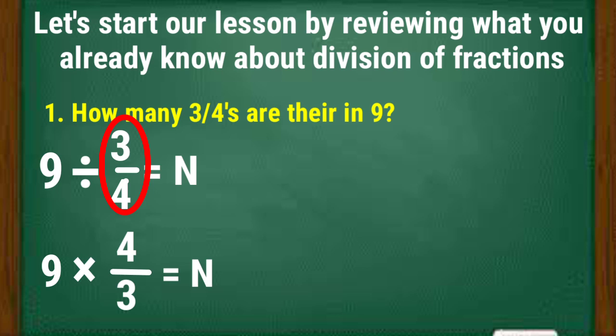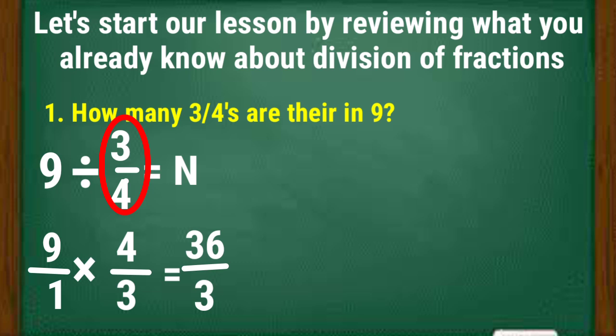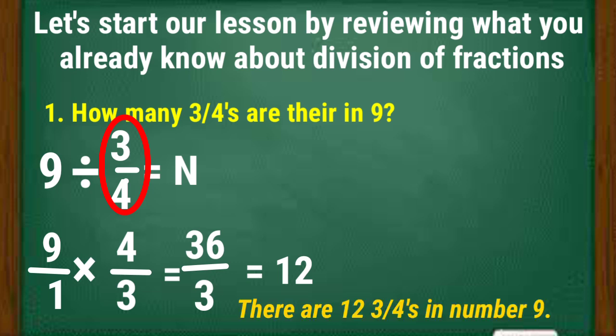Take note that we have a whole number, so we are going to place it over 1. That is 9/1 times 4/3 equals N. Then follow the steps in multiplying fractions: multiply the numerators — 9 times 4 is 36. Multiply the denominators — 1 times 3 is 3. The answer is 36/3. Divide 36 by 3, which is 12. The final answer is that there are 12 three-fourths in number 9.